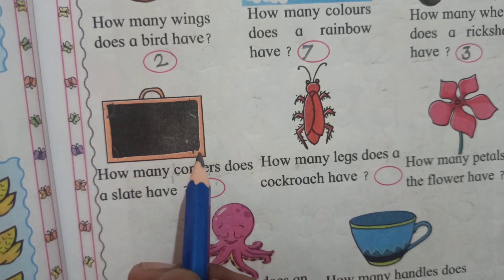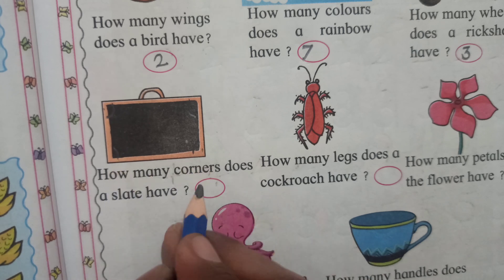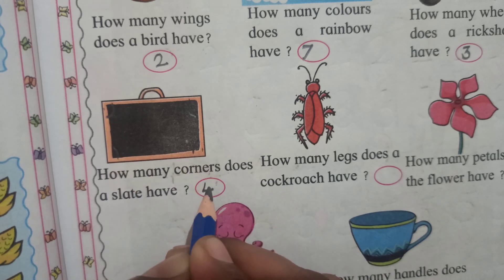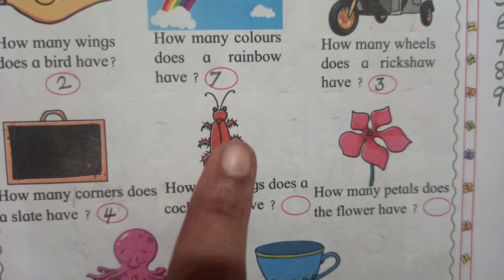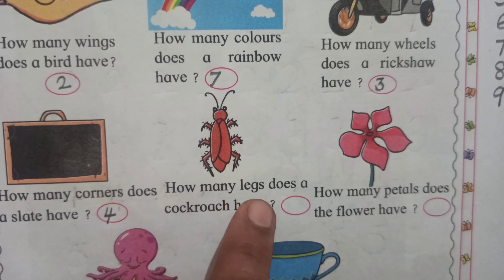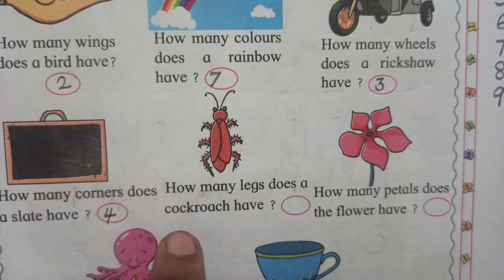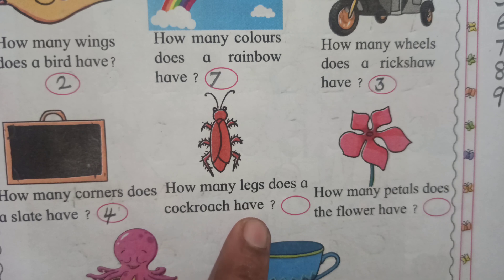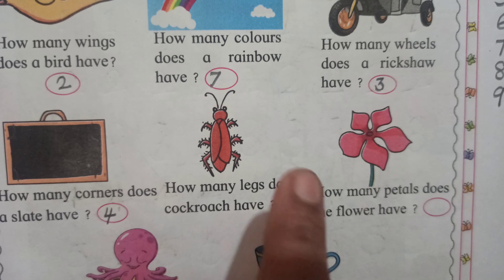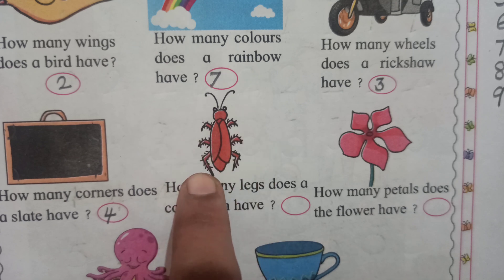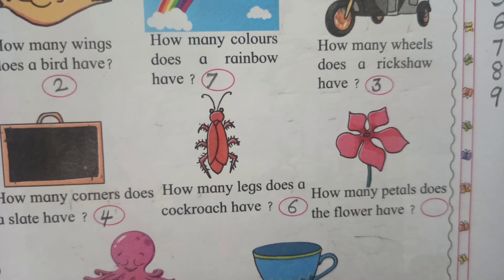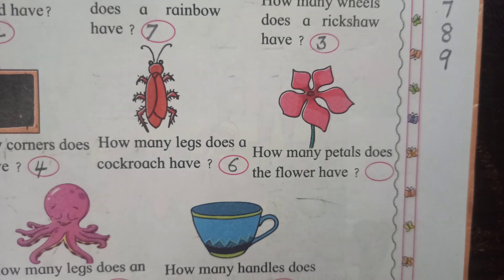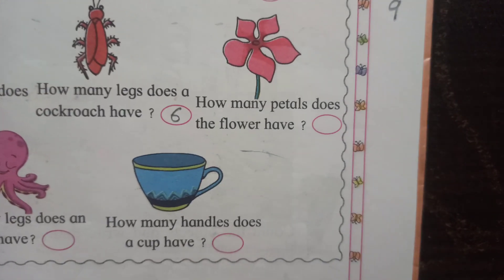Count how many corners — one, two, three, and four. Write four here. Then next — here is a cockroach. How many legs does a cockroach have? Count — one, two, three, four, five, six. Write six. Yes, very good! All of you are becoming very talented — you can write and you can read also. Well done!